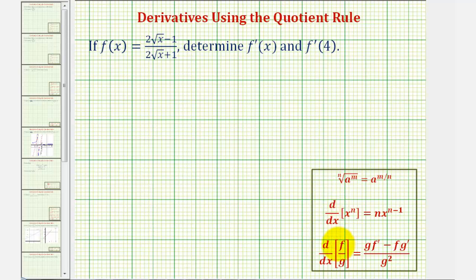The quotient rule states that the derivative of function f divided by function g with respect to x is equal to g times f prime minus f times g prime, all divided by g squared.